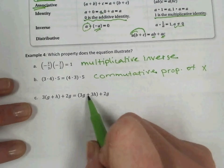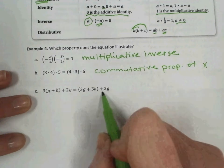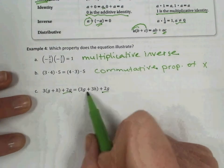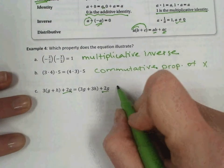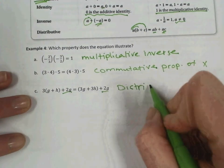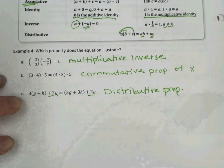And lastly, we have three outside parentheses, g plus h, plus 2g. And now, in the result, we have 3g plus 3h, plus 2g. The 2g stays the same, so what's different? Well, the distributive property happened. So we'll label that distributive property. And this concludes your notes.